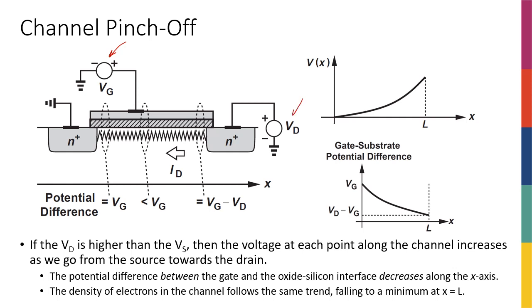But how about VD? Initially I had VD equal to zero, so although my transistor was turned on by VG and I had a channel under the gate, I didn't have any current, simply because the drain and source had the same potential. But then if I start to increase VD, I'm going to have some current, and we saw that we have a resistor-like behavior.